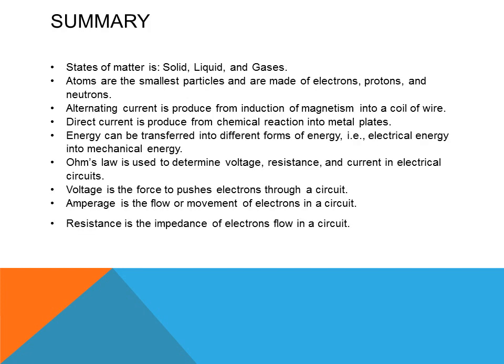To summarize this chapter on basic electricity: matter exists in three different states — solids, liquid, and gases. Atoms are the smallest particles and are made of electrons, protons, and neutrons. Alternating current is produced from induction of magnetism into a coil of wire. Direct current is produced from a chemical reaction with metal plates inside a battery. Electrical energy can be transferred into different forms, such as mechanical energy. Ohm's Law is used to determine voltage, resistance, and current in electrical circuits. Voltage is the force to push electrons through a circuit, amperage is the flow or movement of electrons, and resistance is the impedance of electrons in a circuit.